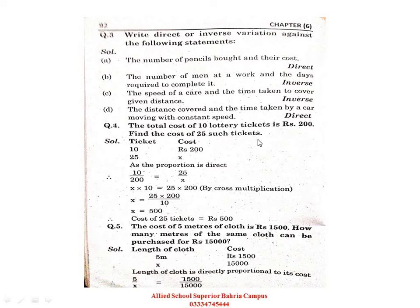If 25 tickets are to be bought and 10 tickets cost rupees 200, how much will 25 tickets cost? First, we identify the variation between tickets and cost — tickets are one variable and cost is the other. Ten tickets cost 200 rupees; how much will 25 tickets cost? We take X as the unknown variable.